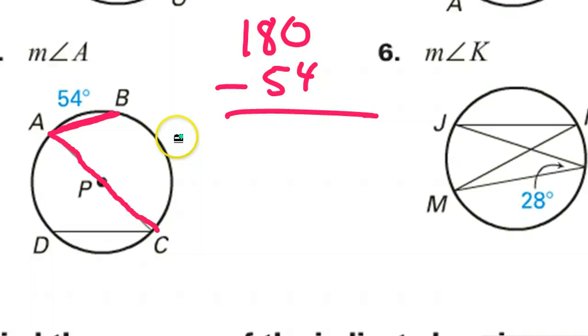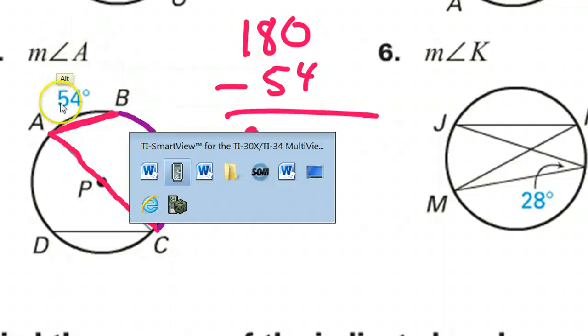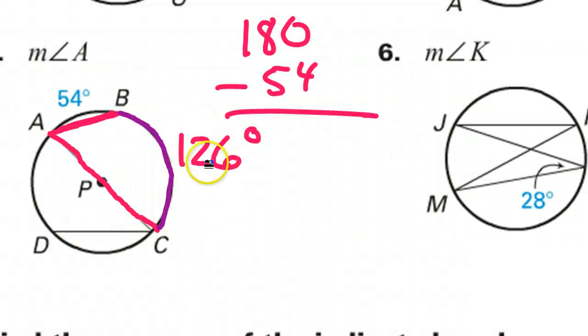So this is 126 degrees, this arc out here. I'm talking about this purple arc. But that arc is double the inscribed angle. So if I take half of this, that should be my answer. So this is going to, well, half of 120 is 60. And half of 6 is 3. So 63. So angle A is 63 degrees.